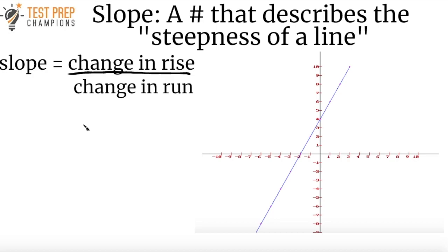Have you ever heard anybody say that the slope is the rise over the run? If you've never heard that before, that's okay because I'm going to explain what that means here. A better way to think about it is that the slope is the change in rise divided by the change in run — the slope is the change in rise over the change in run.